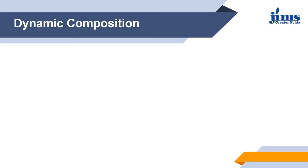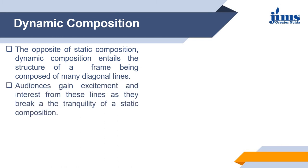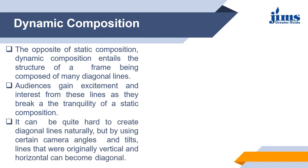The opposite of static composition is dynamic composition, which entails the structure of a frame being composed of many diagonal lines. In static composition we use horizontal and vertical lines; in dynamic composition we make a frame using many diagonal lines. The audience gains excitement and interest from these lines as they break the tranquility of static composition. It can be quite hard to create diagonal lines naturally, but by using certain camera angles and tilts, lines that were originally vertical and horizontal become diagonal. Here is an example of such a frame.